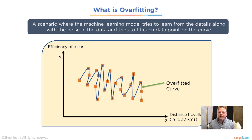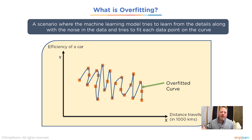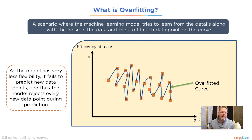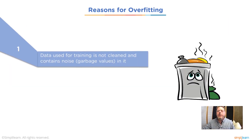You can see that if you plug in your coordinates, you're just going to get whatever it's fitted — every point on the data stream. There's no average. There's no two points that might have two different answers. For example, if the wind blows a certain way and your car has a headwind, it might alter how efficient it is. The model allows no variance, and as the model has very little flexibility, it fails to predict new data points and rejects every new data point during prediction.